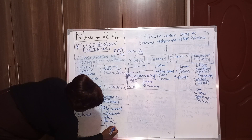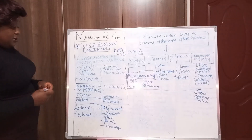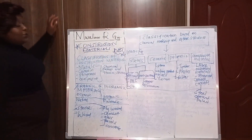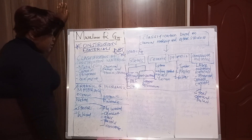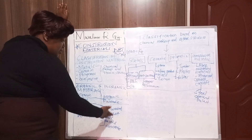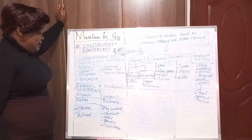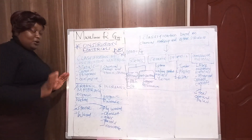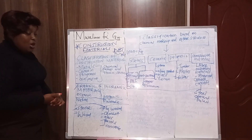We can also have concrete, which we make as a mixture of sand, cement, water, and ballast. So these are examples of inorganic materials which are man-made: plywood, cement, glass, paint, concrete, and many more. For natural organic materials, they exist naturally on the earth's surface — examples include stone and wood.